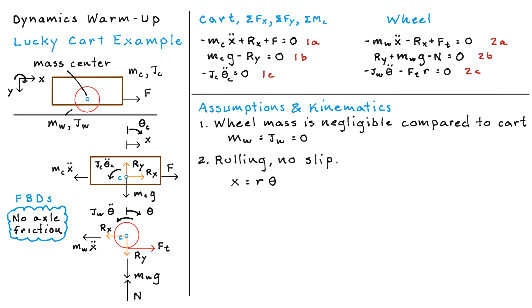The other assumption is that it's rolling without slip. And again, we'll revisit this at the very end and see what happens if we relax that a little bit. But anyway, that gives us this kinematic relationship that X is equal to R theta.